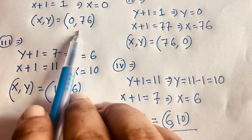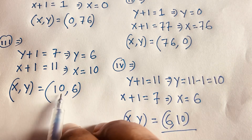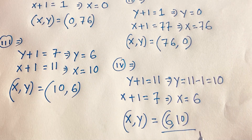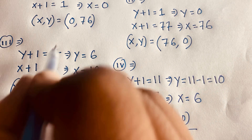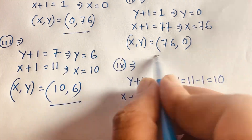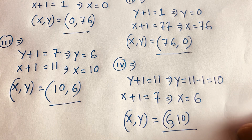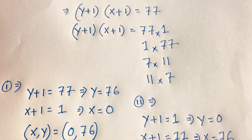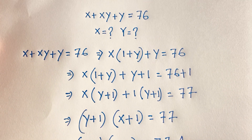So our complete final answers are: (x, y) = (0, 76), (76, 0), (10, 6), and (6, 10) — where x and y are positive integers. Thank you all. If you enjoyed this video, please subscribe to my channel for more interesting videos. Goodbye, take care.